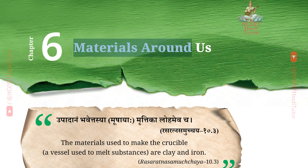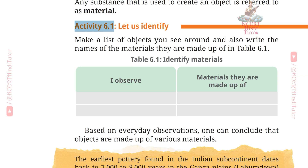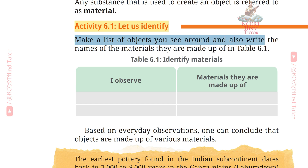Chapter 6: Materials Around Us — Question Answers from Class 6 Science. Activity 6.1: Let us identify. Make a list of objects you see around and also write the names of the materials they are made up of in Table 6.1.